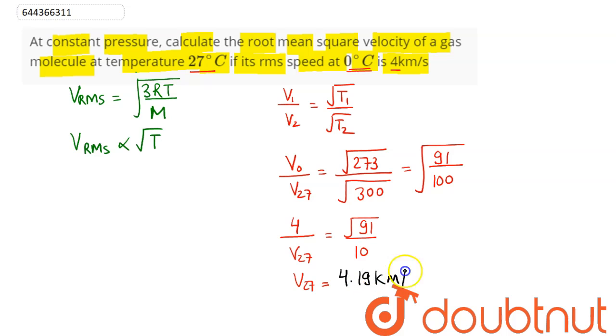Hence we can say speed at 27 degree Celsius of the gas molecule is equal to 4.19 kilometer per second, which is the RMS root mean square velocity, which is our answer.